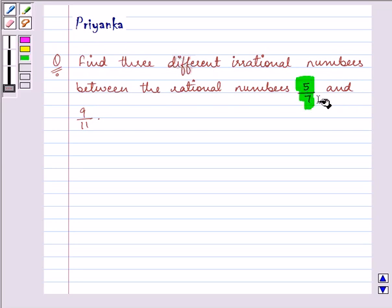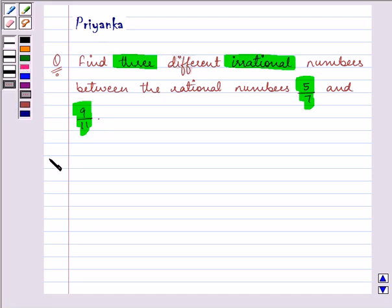So we need to find it between 5 by 7 and 9 by 11, three different irrational numbers. So let us start with our solution. Let us write the following question in a mathematical form.